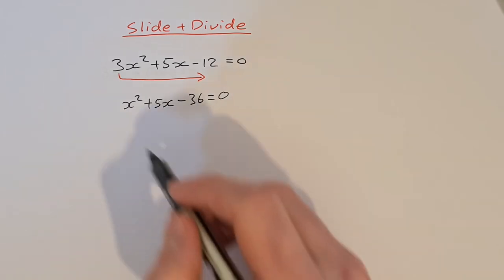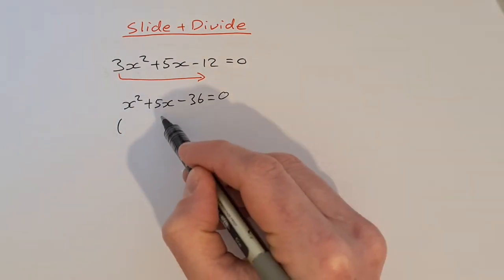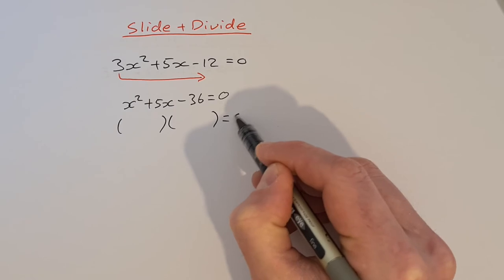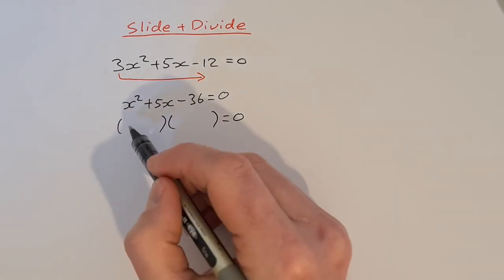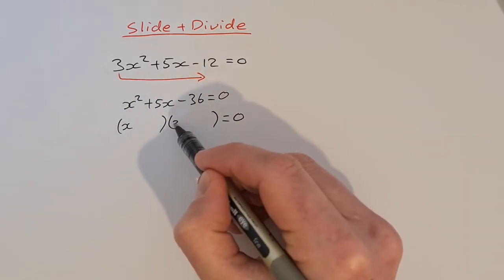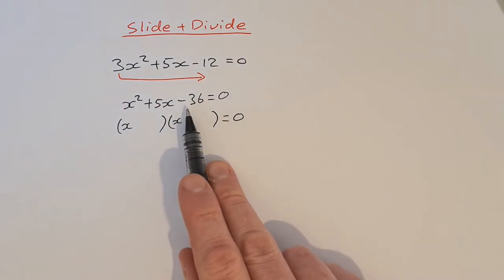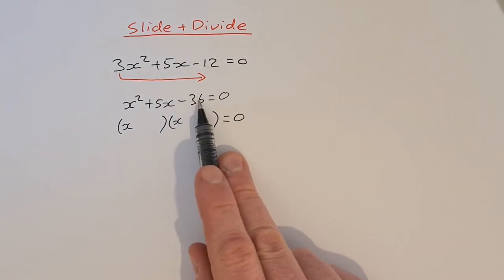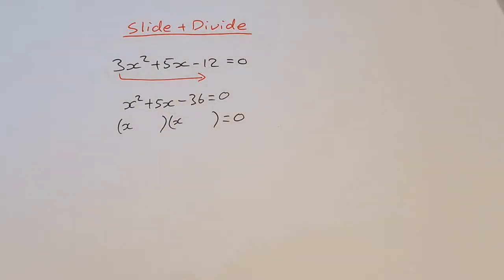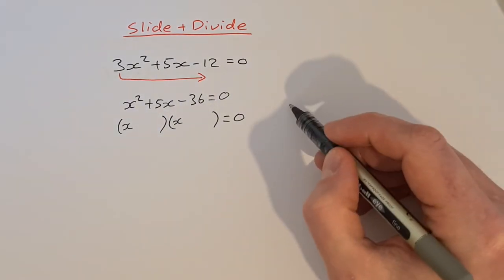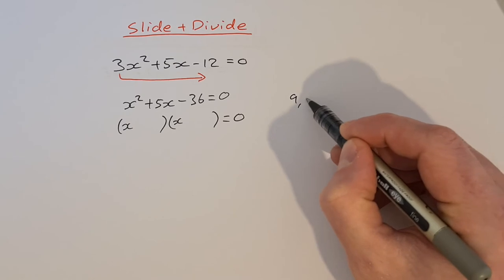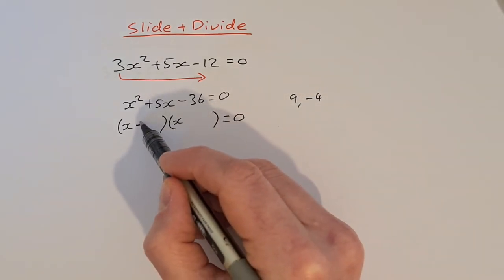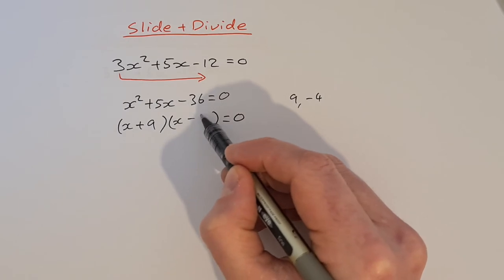Then I'm going to factorize this by opening up two sets of brackets. I factorize x squared as just x by x — that's easy. And then the same as last time, I'm looking for factors of minus 36 that add together to give 5. We already know those factors are 9 and minus 4, so we put them into the brackets: plus 9 and minus 4.